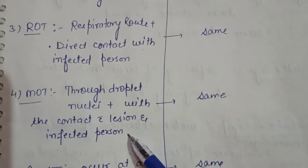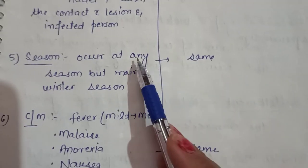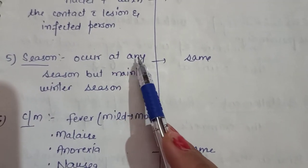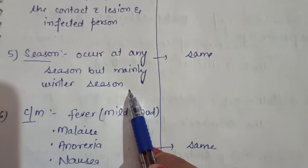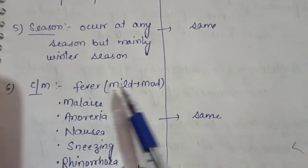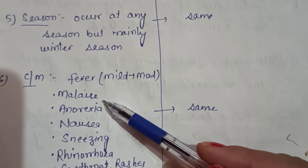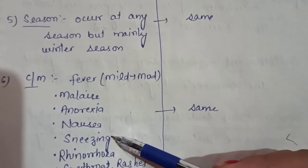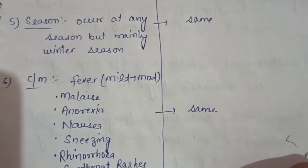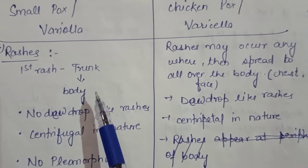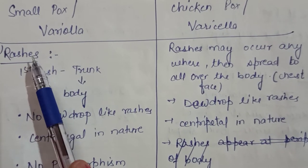Both smallpox and chickenpox may occur at any season but are mainly seen in the winter season. Signs and symptoms are approximately the same: fever, mild to moderate malaise, anorexia, nausea, sneezing, rhinorrhea (running nose), sore throat, and rashes. Now we will discuss the differences between the rashes.